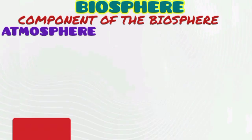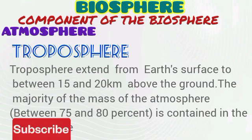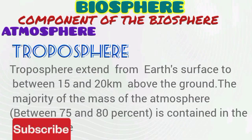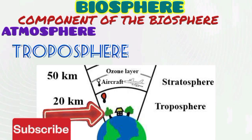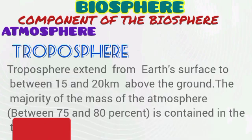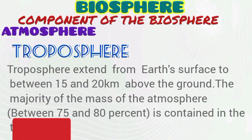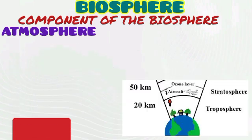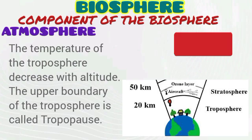Let's start with the lower atmosphere called the troposphere. Troposphere extends from earth's surface to between 15 and 20 km above the ground, as shown in the diagram. The majority of the mass of the atmosphere — between 75 and 80% — is contained in the troposphere. This is as a result of numerous particles such as dust, ash particles, as well as water vapor present in the troposphere.